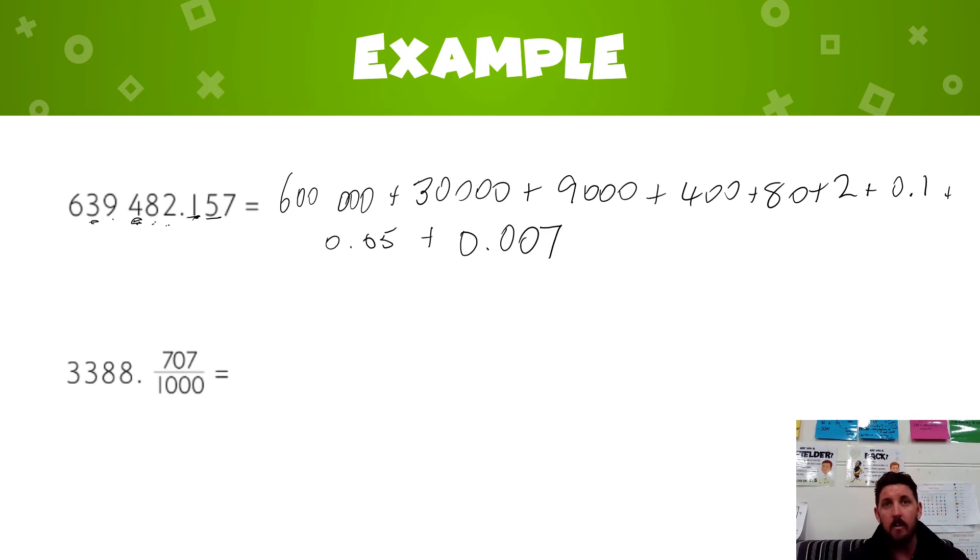I'm going to do the same for the second one, but this time I'm going to use fractions. So I have three thousand plus three hundred plus eighty plus eight plus. Now I have seven, zero, and seven over thousands. So I'm going to put seven tenths plus, and now I could do zero hundredths and seven thousandths. I actually don't need this one, so I could cross that out and remove it.